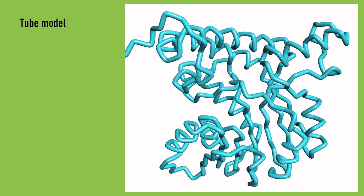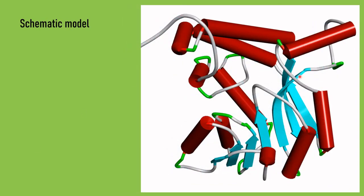This is tube model of representation. In this model we cannot differentiate between the helices and beta sheets. This is schematic model. In this schematic model, the helices are represented as cylinders, the beta sheets are represented as arrows, and the loops you can see them as wires.